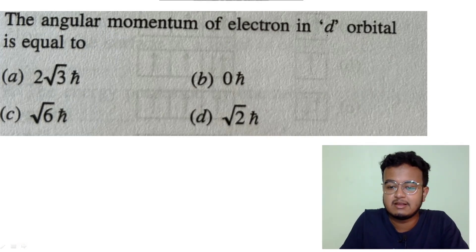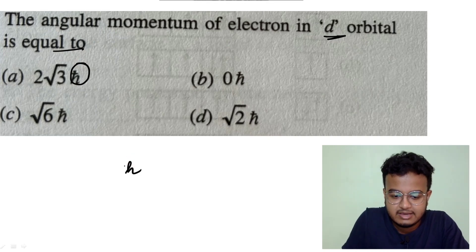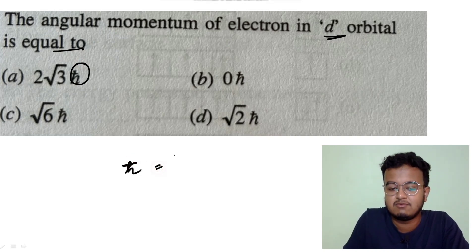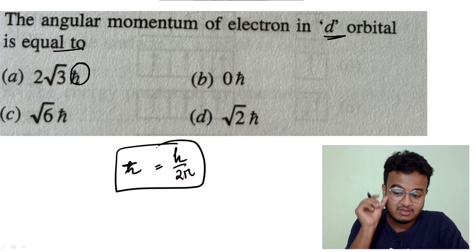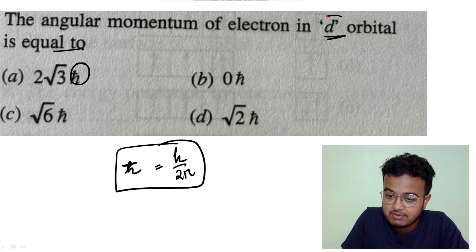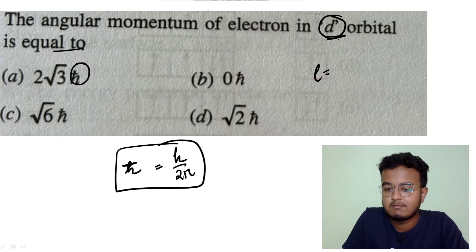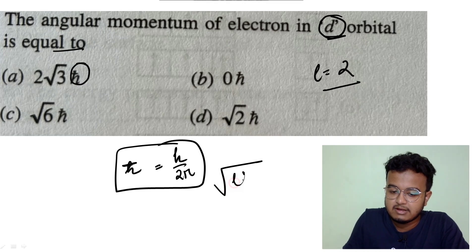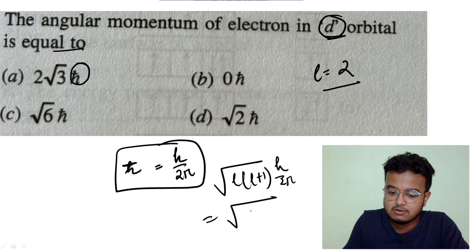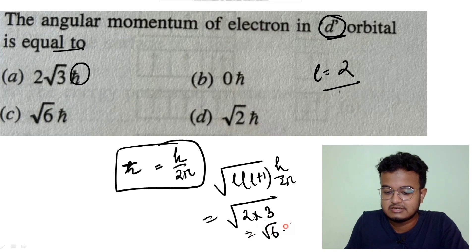Next: the angular momentum of an electron in a d orbital. The formula is root of l(l+1) times h/2π. For the d orbital, l equals 2, so it is root of 2(2+1) equals root of 6, meaning the angular momentum equals root 6 times h/2π.